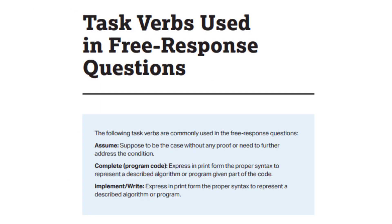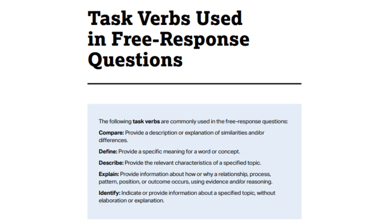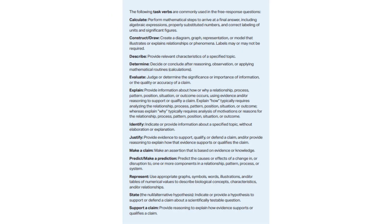The next page is the Task Verbs, which are the types of questions you'll see on the FRQ. For AP Human, your FRQs will only ask you to compare, define, describe, explain, and identify — each requiring a different approach to correctly answer. For AP Biology, there are different task verbs like calculation, which asks you to label your units and use proper significant figures, and that's something important to note when doing mathematics on the exam.